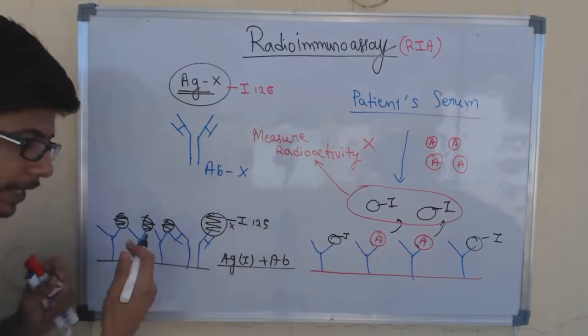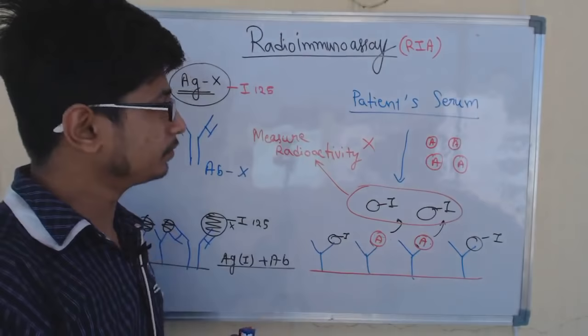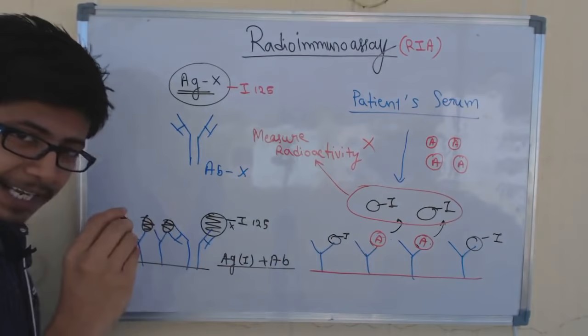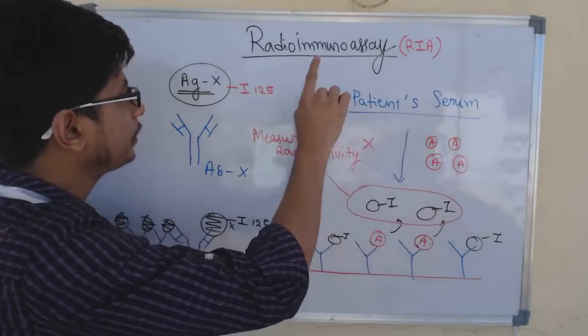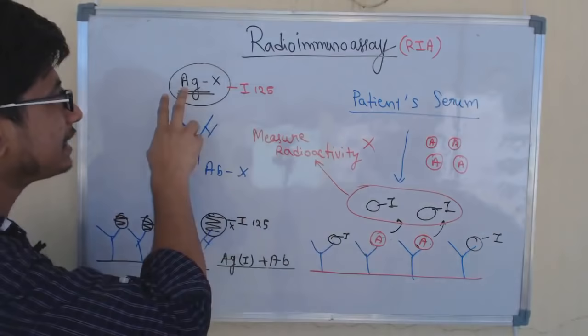Once the kit is prepared, the second stage is to test the patient's sample — patient's serum in this case. We don't know whether any antigen is present or not. We take our kit and add the patient's serum into it. If the patient's serum contains the same antigen X that we used here, we need to detect that antigen X in the patient's serum, which is why antigen X was tagged with iodine for the kit.